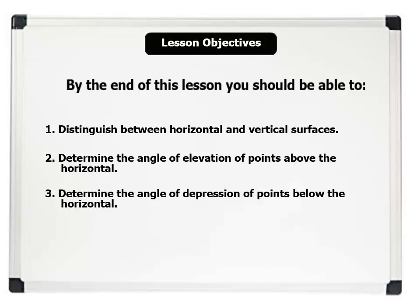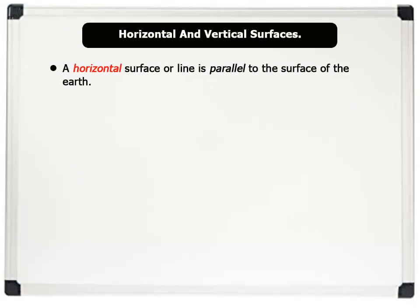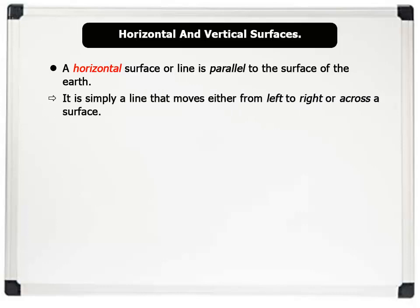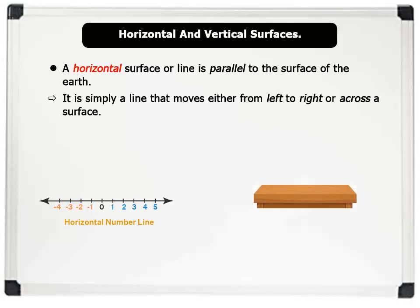Let us now discuss horizontal and vertical surfaces. A horizontal surface or line is parallel to the surface of the earth. This simply means that a horizontal line moves either from left to right, or across the surface. For example, this is a horizontal number line. Also, the top surface of a table is a horizontal surface.